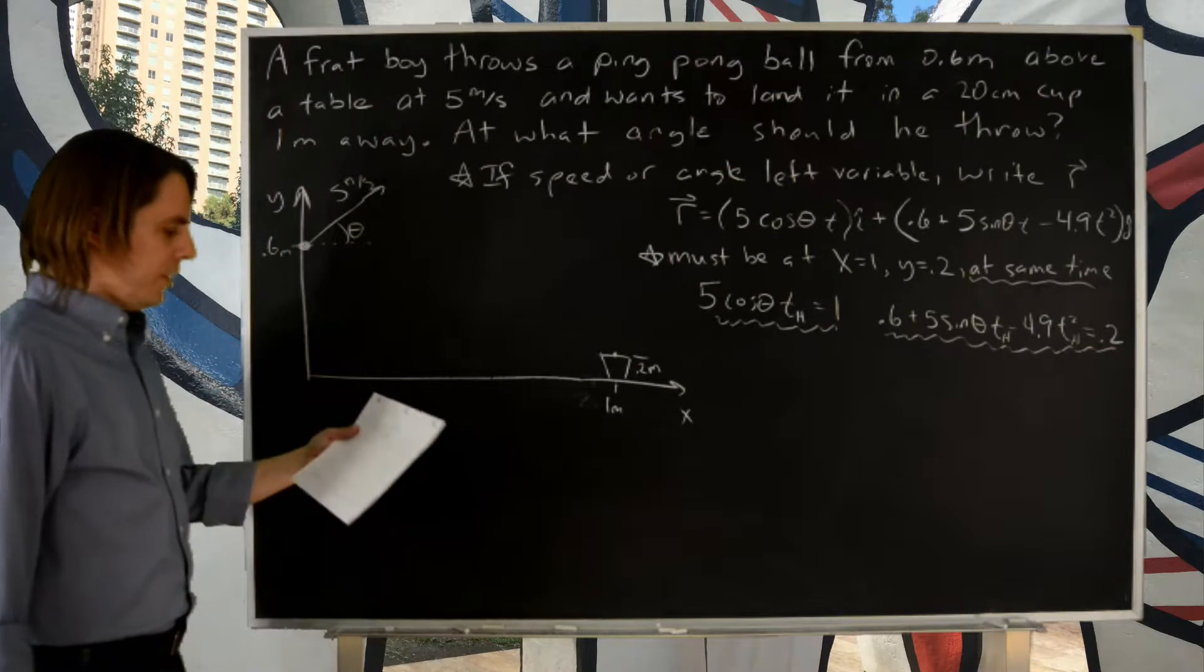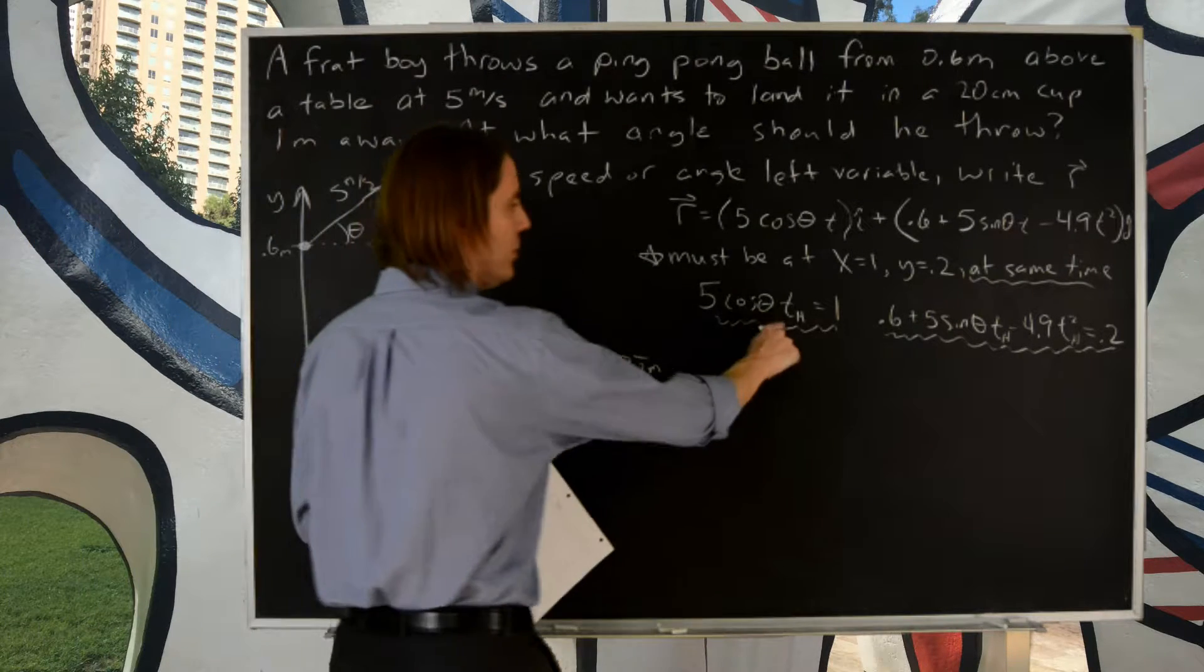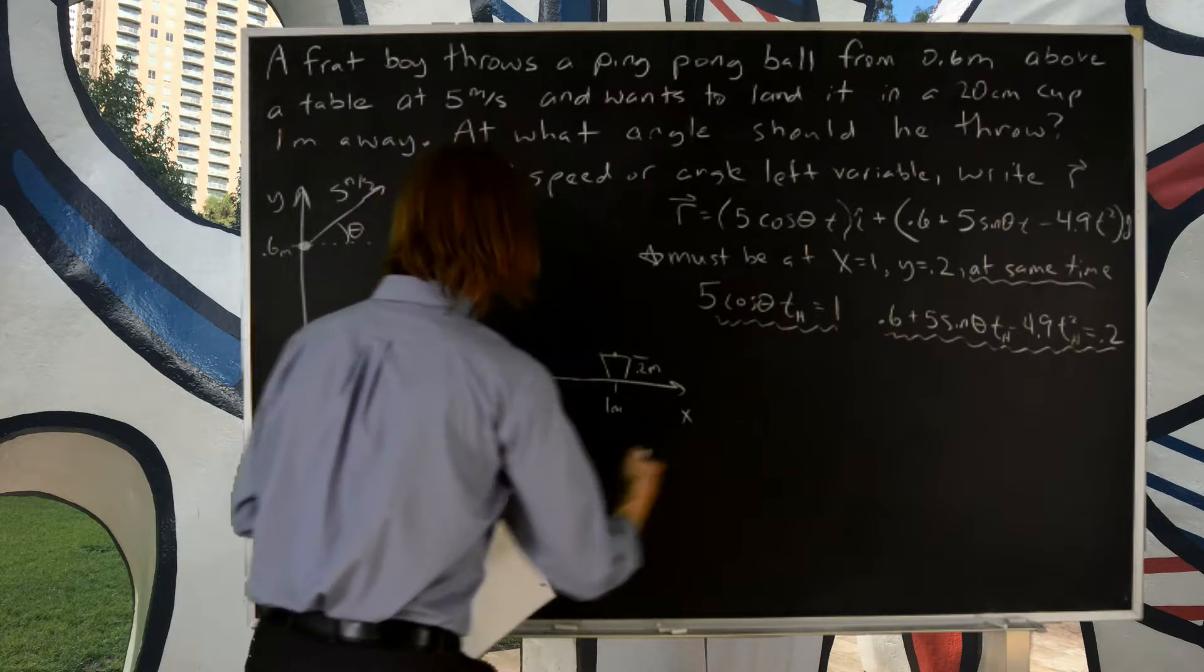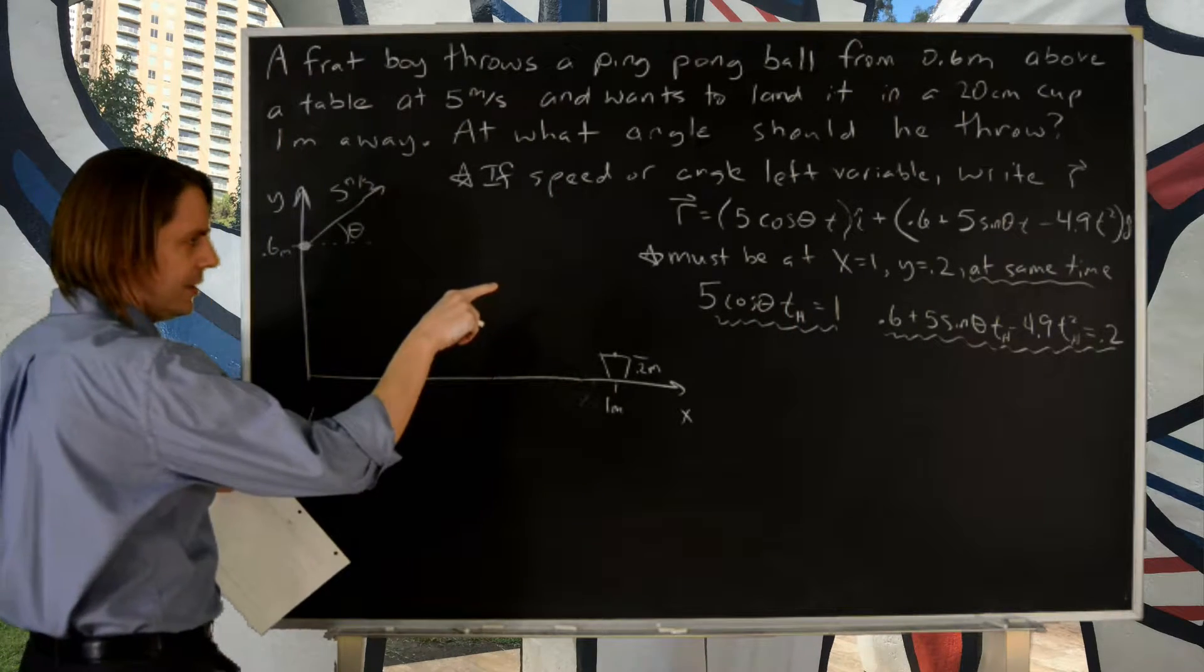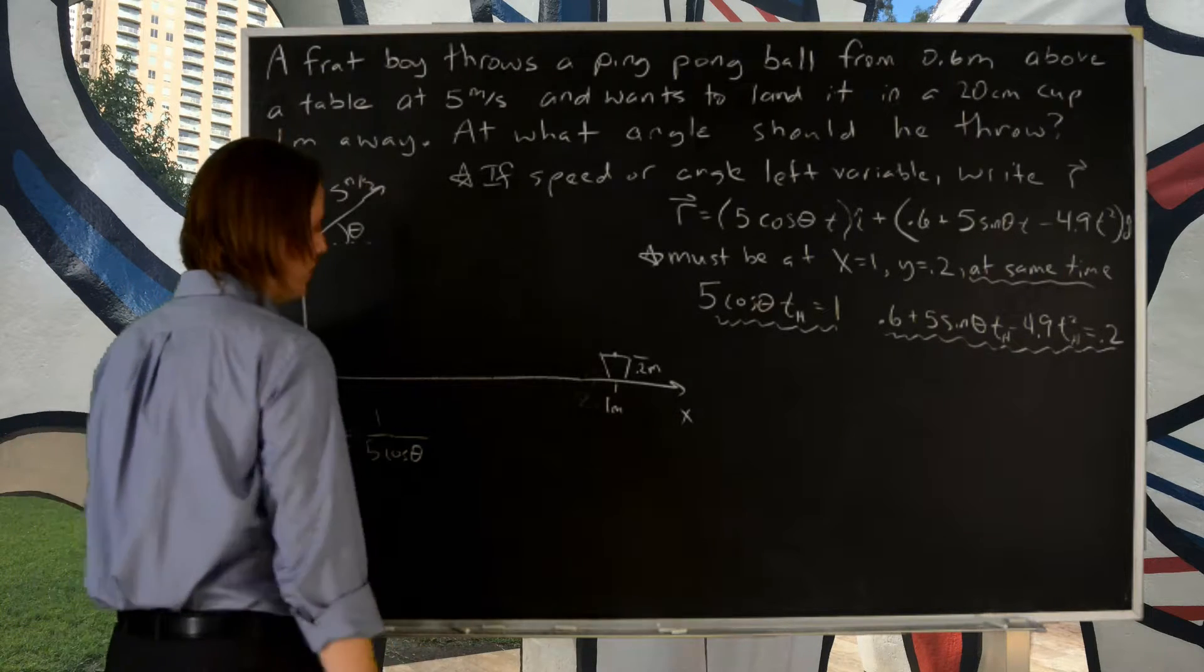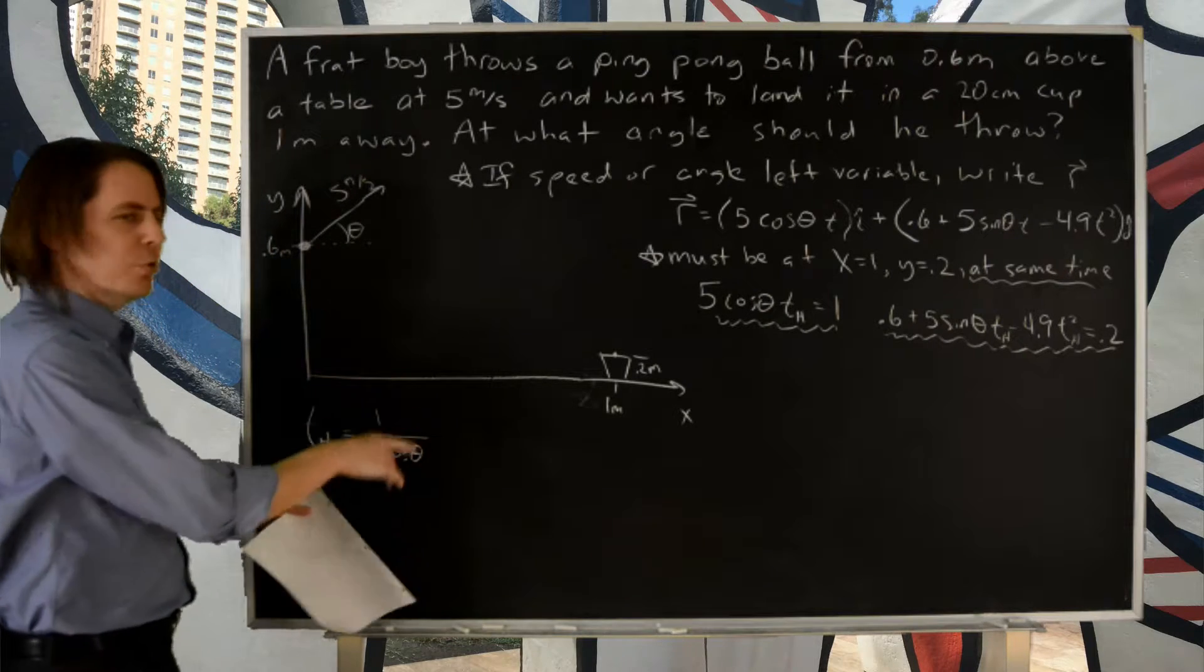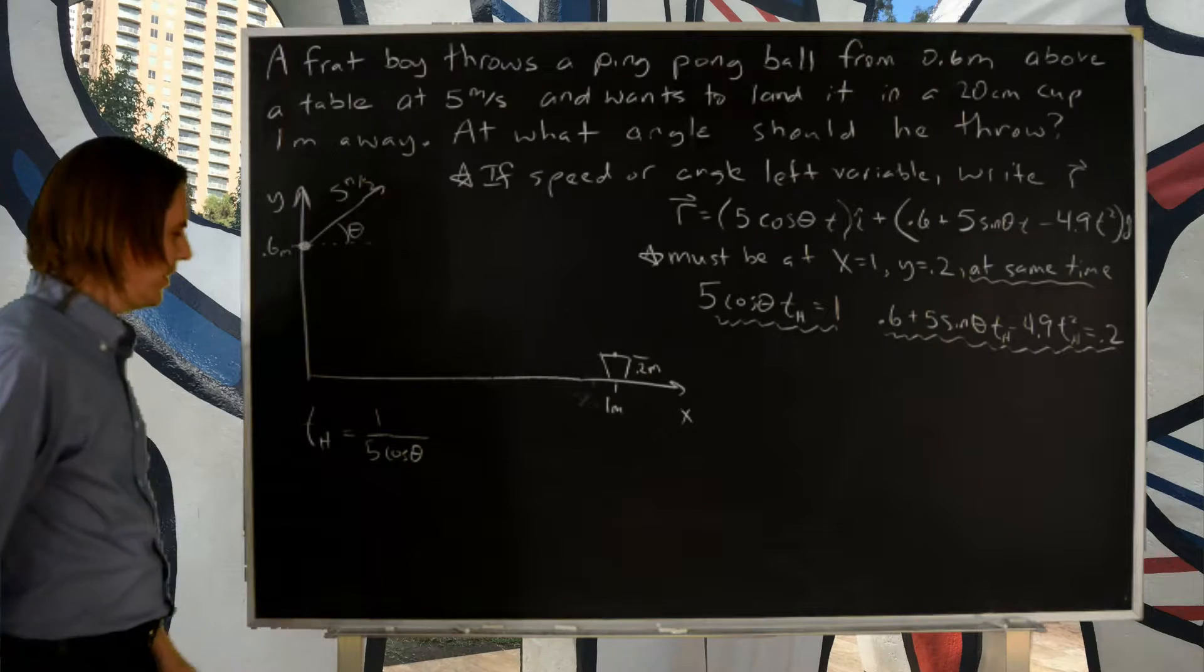How are we going to solve those? Well, typically you stick one into the other. This one looks easy to solve for t, so let's do that. Let's say that the hang time th in this case is 1 over 5 cosine theta. And I'm leaving off all kinds of units. This is meters divided by meters per second, so it is indeed seconds. t is in seconds, et cetera.